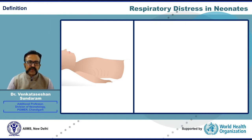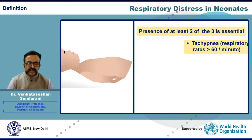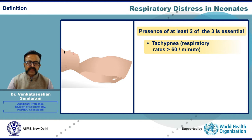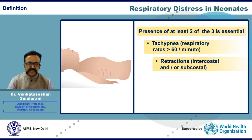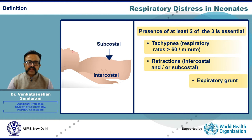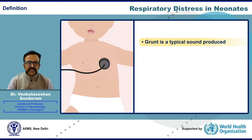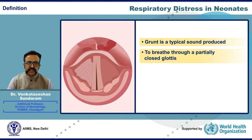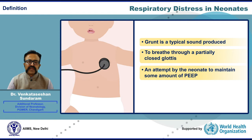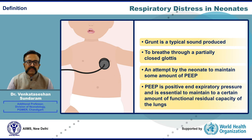Respiratory distress in neonates is defined as the presence of at least two of three clinical signs: tachypnea defined as a rate greater than 60 per minute, retractions which can be intercostal and/or subcostal, and an expiratory grunt — in a neonate who is less than 28 days of postnatal age. Grunt is a typical sound produced while the newborn attempts to breathe through a partially closed glottis.